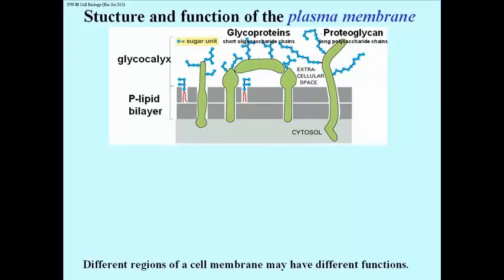We have proteins embedded in the membrane, and sugars that are covalently attached on the external surface, on the outside of the cell. We refer to this sugar-coated cell surface as the glycocalyx.